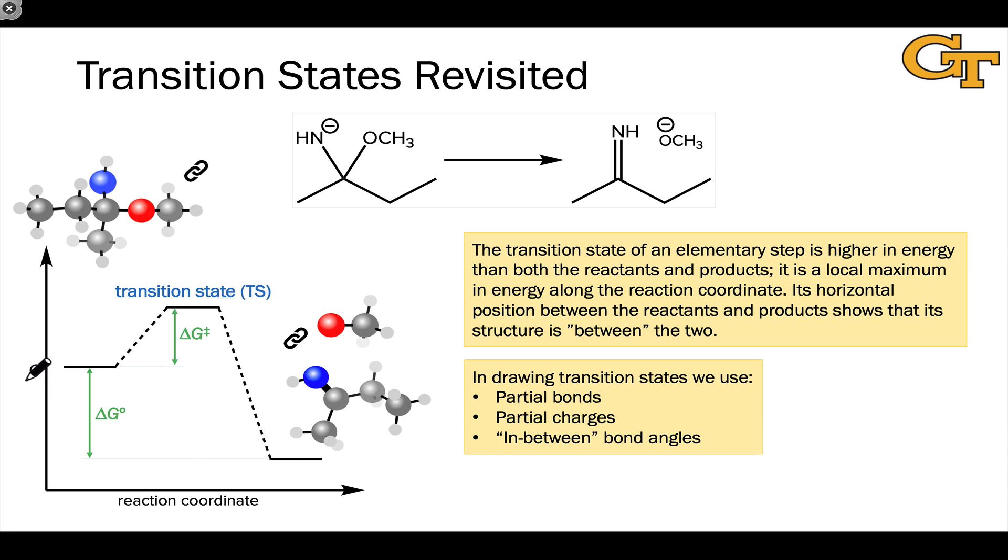When we plot the free energy of the reactants as they transform into products, we see a roller coaster type shape with an increase in energy going uphill first, followed by a decrease in energy going downhill to the products. This is the basic shape of any elementary step when we plot reaction coordinate and free energy.